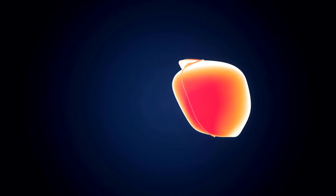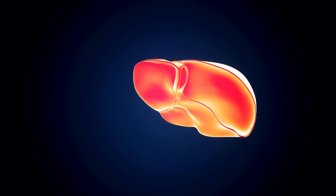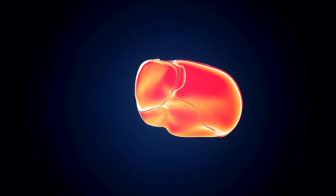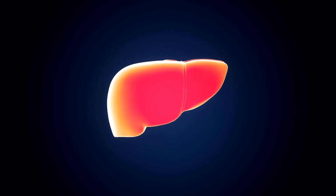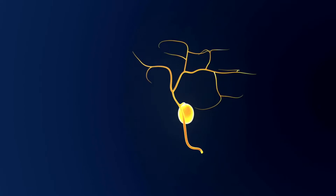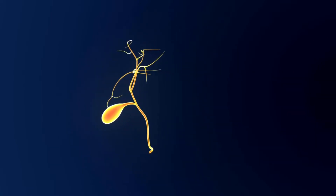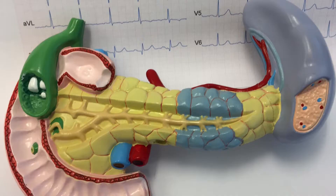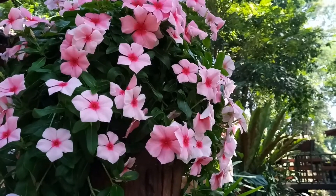What functions and tasks does your liver perform? The liver regulates most chemical levels in the blood and secretes a product called bile. The gallbladder is a partner organ of the liver. The common bile duct transports the bile produced by liver cells into the gallbladder and your duodenum, which is the first part of your small intestine. Bile is made by your liver and stored in your gallbladder.